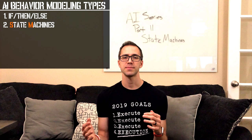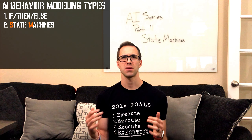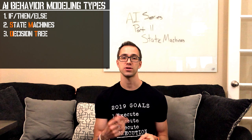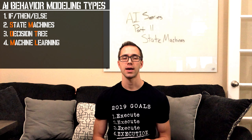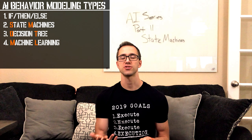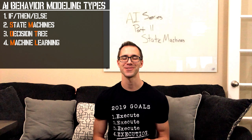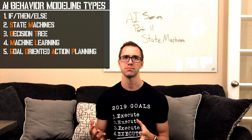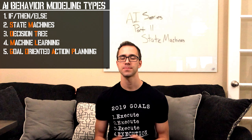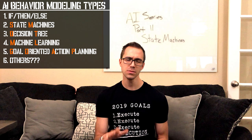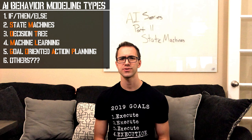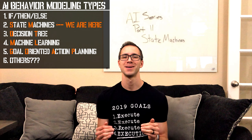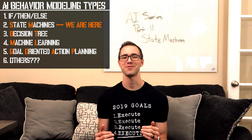There are other types of AI behavioral modeling like decision trees, and you can even use ML — that's machine learning — to teach your AI how to move around and behave in different scenarios. We're not getting into those yet. We're starting with the state machine because it's like level two in behavioral modeling.